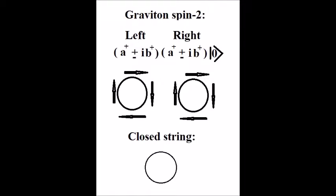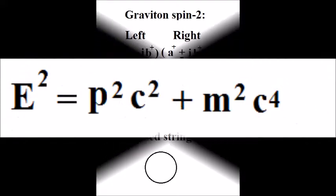Strings are considered one-dimensional filaments of energy, so the graviton must have momentum and energy. This makes sense given the fact that all other force-carrying particles have momentum and energy.